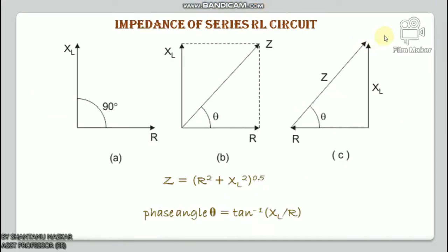The impedance of a series RL circuit opposes the flow of alternating current. The impedance is the combined effect of resistance R and inductive reactance XL of the circuit as a whole. The impedance Z in ohms is given by: Z = √(R² + XL²), and the phase angle θ = tan⁻¹(XL / R).